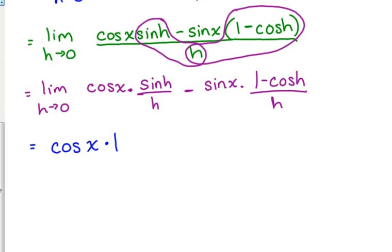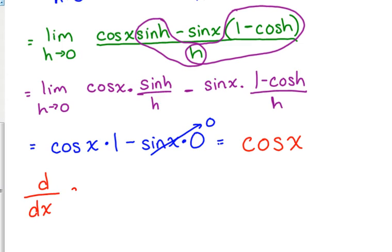So, that's the cosine of x times 1 minus the sine of x and the limit as h approaches 0 of 1 minus cosine of h over h is 0. So, sine of x times 0 is 0. So, this just leaves me with the cosine of x. So, the conclusion is the derivative with respect to x of the sine of x is equal to the cosine of x.